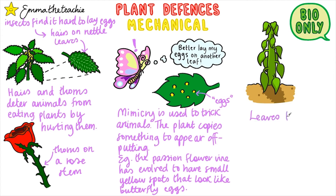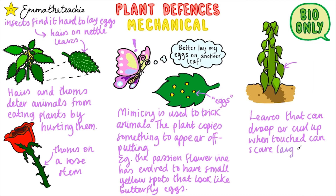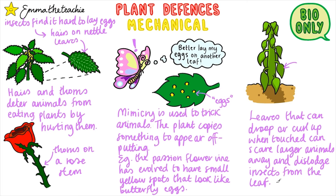And finally, leaves that can drip or curl when touched can scare animals away and also cause insects to fall off or fly away from the plant.